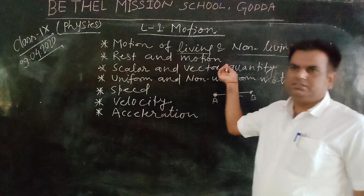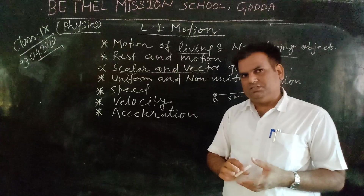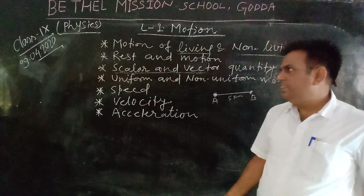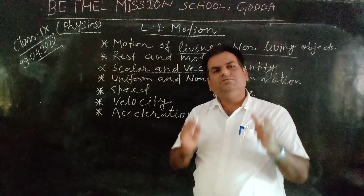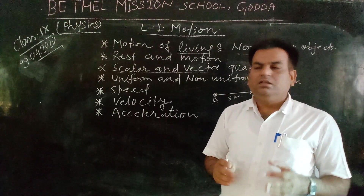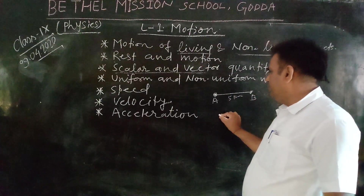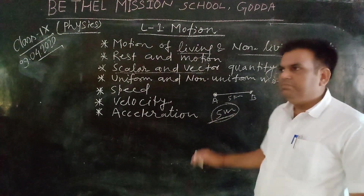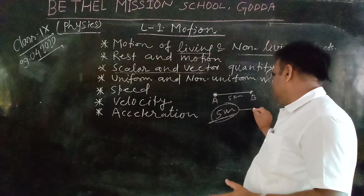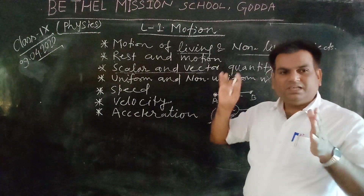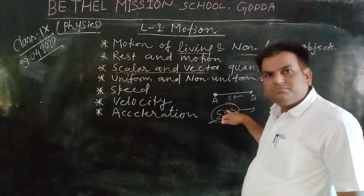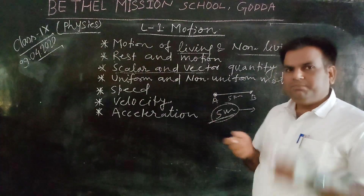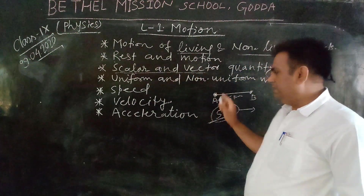Scalar and vector quantity — these are the physical quantities. What is scalar quantity and what is vector quantity? Scalar quantity means those physical quantities which have only magnitude. For example, if we say five metres — that is a scalar quantity because it has no direction. In vector quantity, the object must have magnitude as well as direction. Vector quantity has magnitude as well as direction.